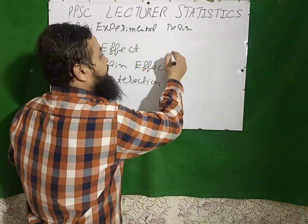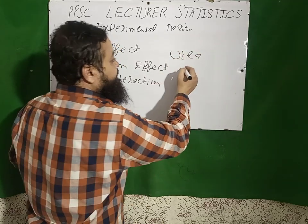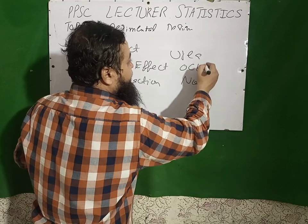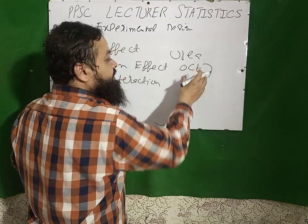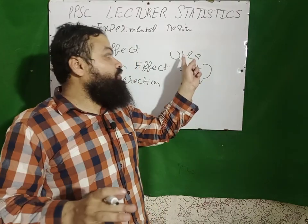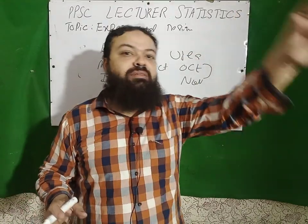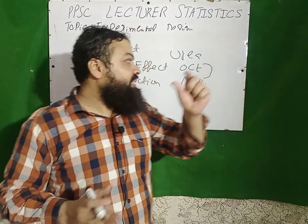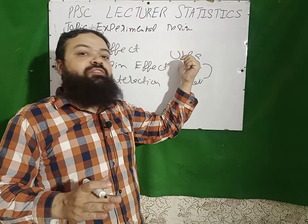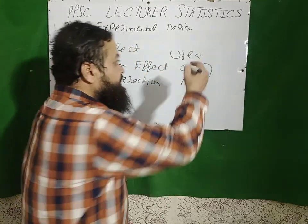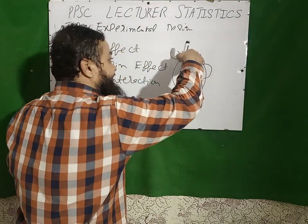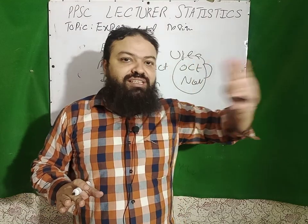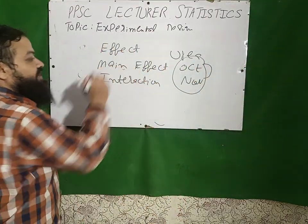For example, I applied urea fertilizer. It has two levels: the month of October and the month of November. I want to check the change in the effect of the treatment of urea applied on the experimental units — the average change in the levels of that factor by not considering the other factors. It is called the main effect.